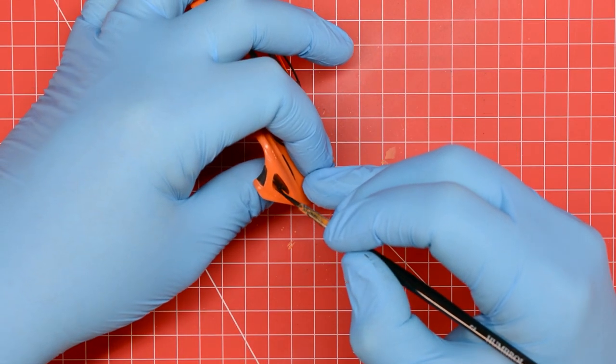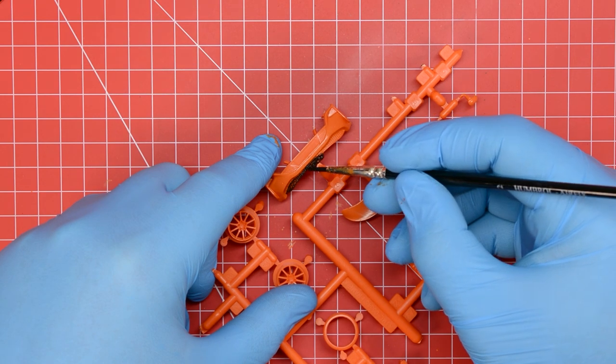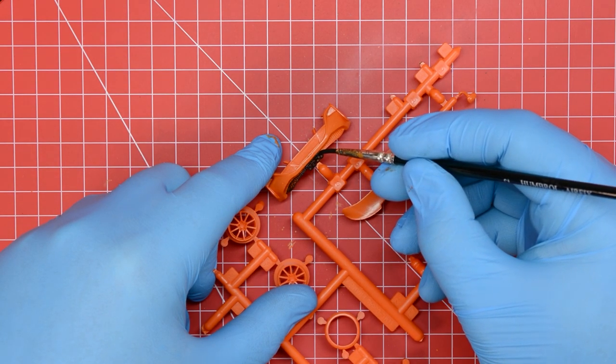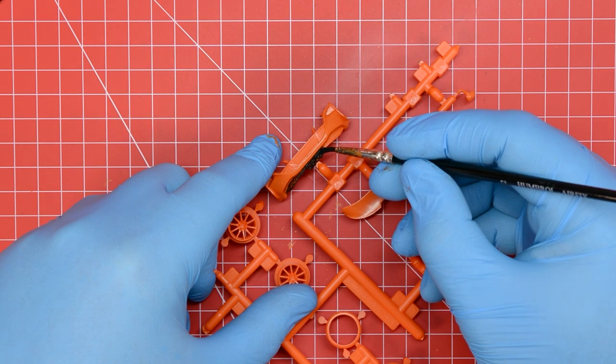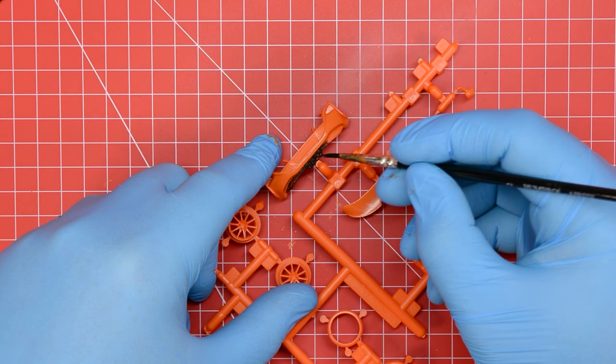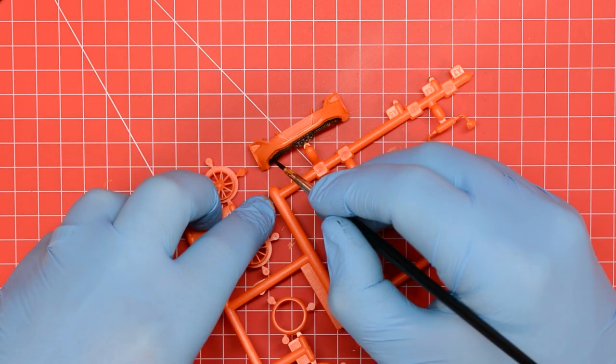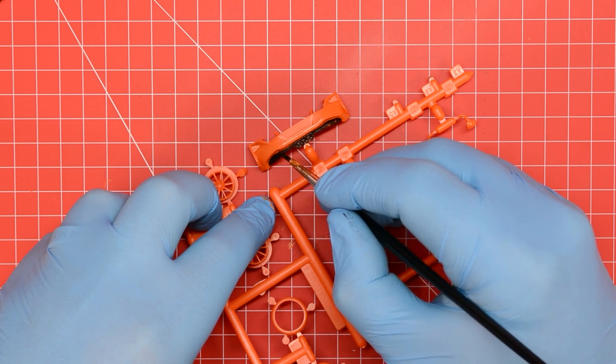It's best to try and avoid getting any of the black paint onto the orange paint as orange doesn't cover particularly well and it will take several layers to cover up any mistakes.